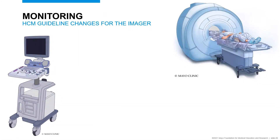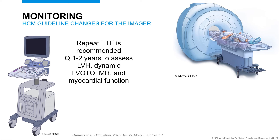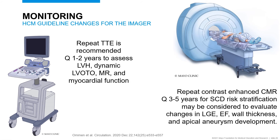Transitioning to monitoring: there is no change with regards to echocardiographic evaluation. A repeat echo is recommended every one to two years to assess LV hypertrophy, dynamic outflow tract obstruction, mitral regurgitation, and myocardial function. However, the guidelines now also recommend serial cardiac MRI — it's reasonable to consider a cardiac MRI every three to five years — so expect to see more cardiac MRIs on established HCM patients to help with sudden cardiac death risk stratification.